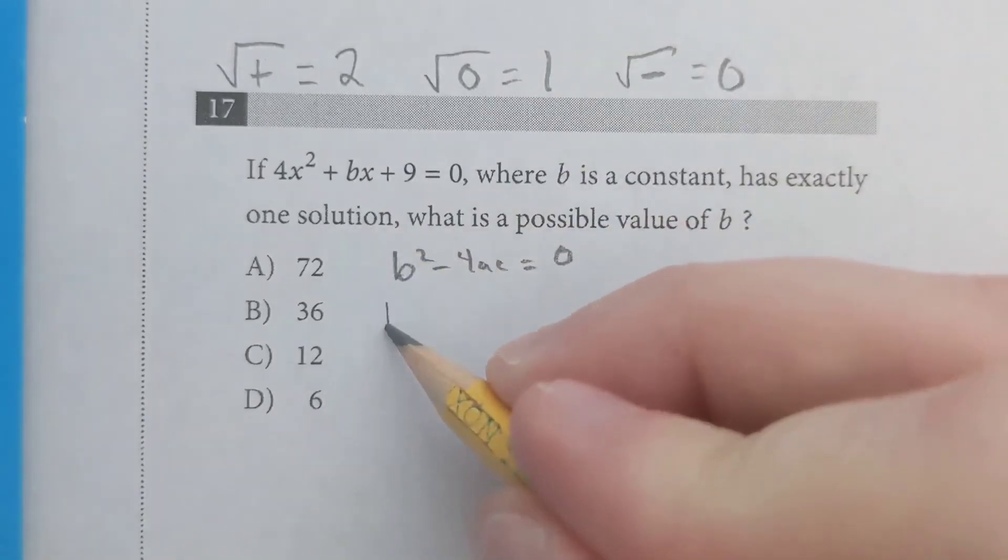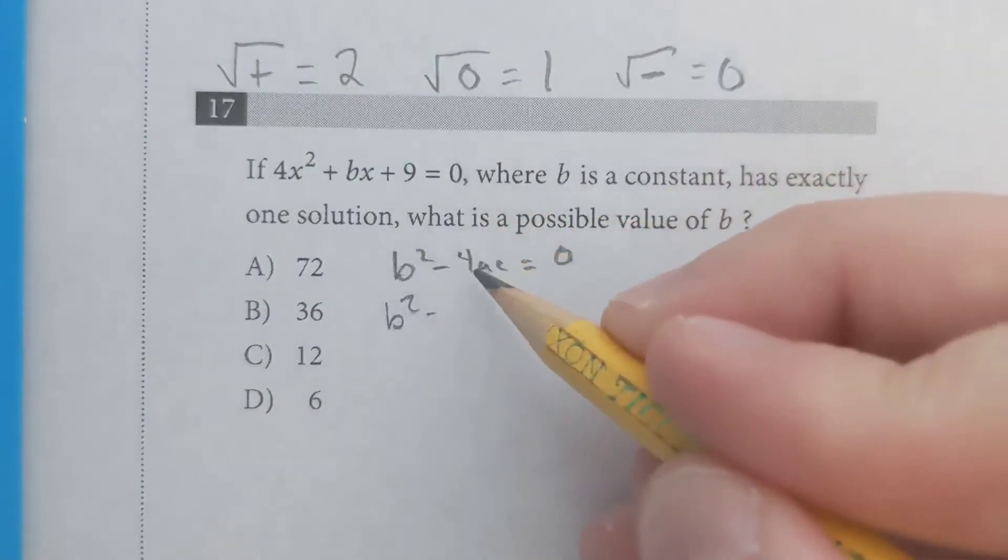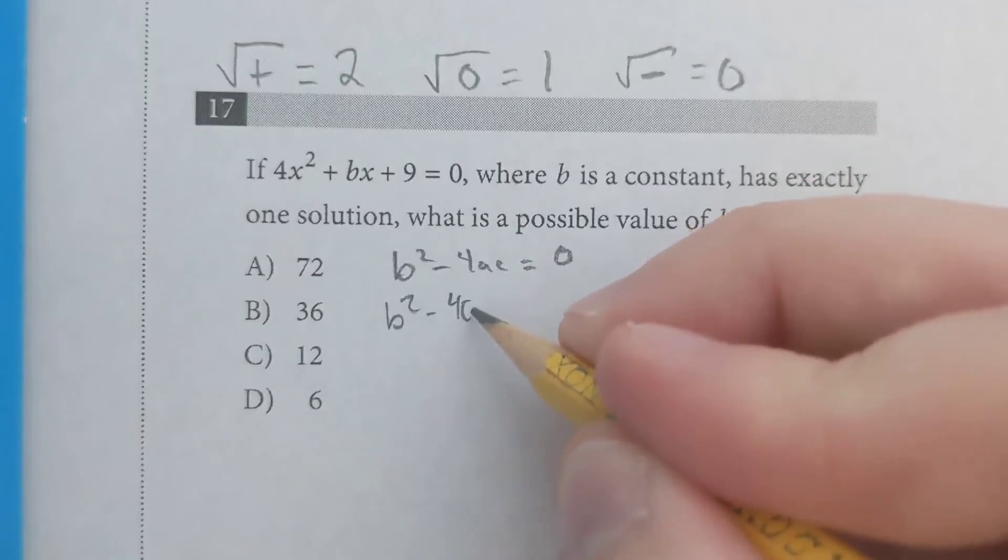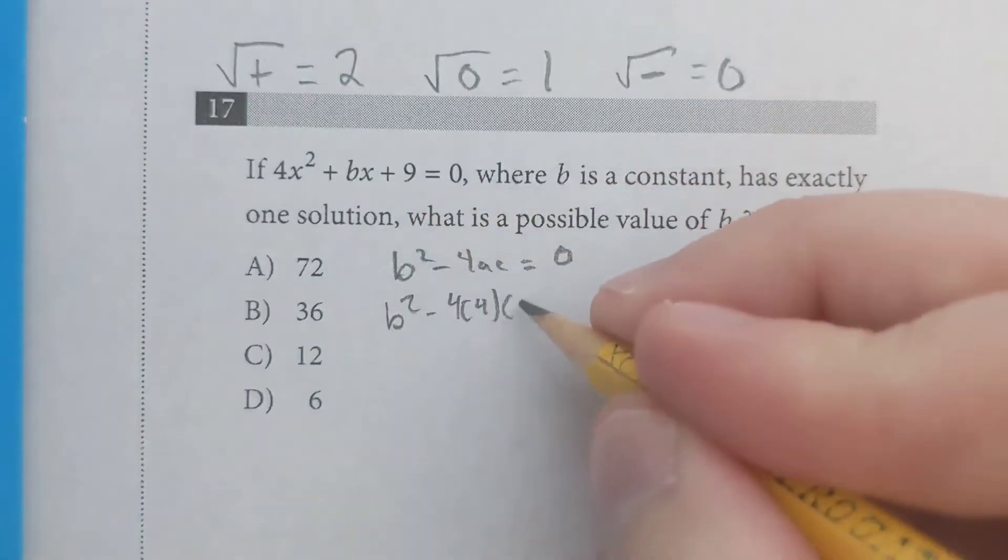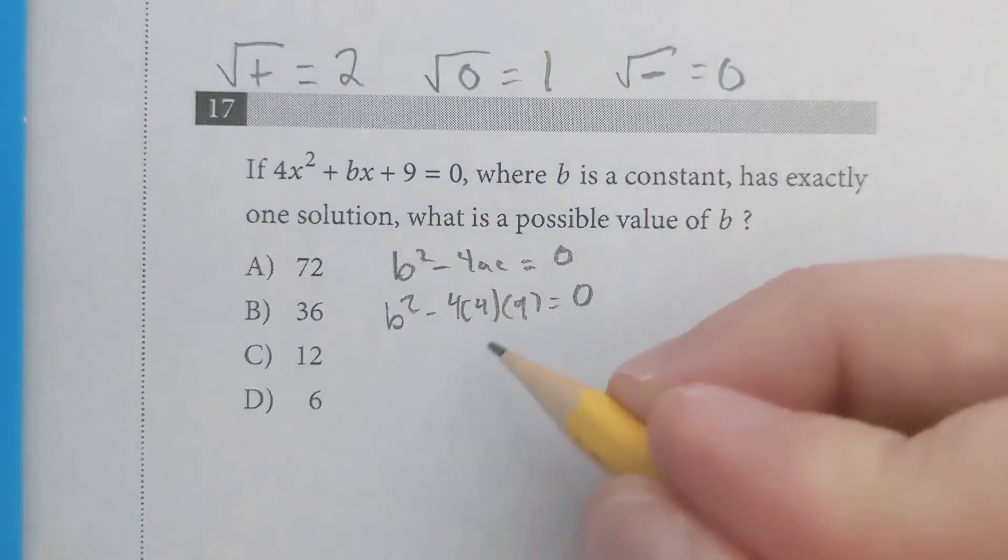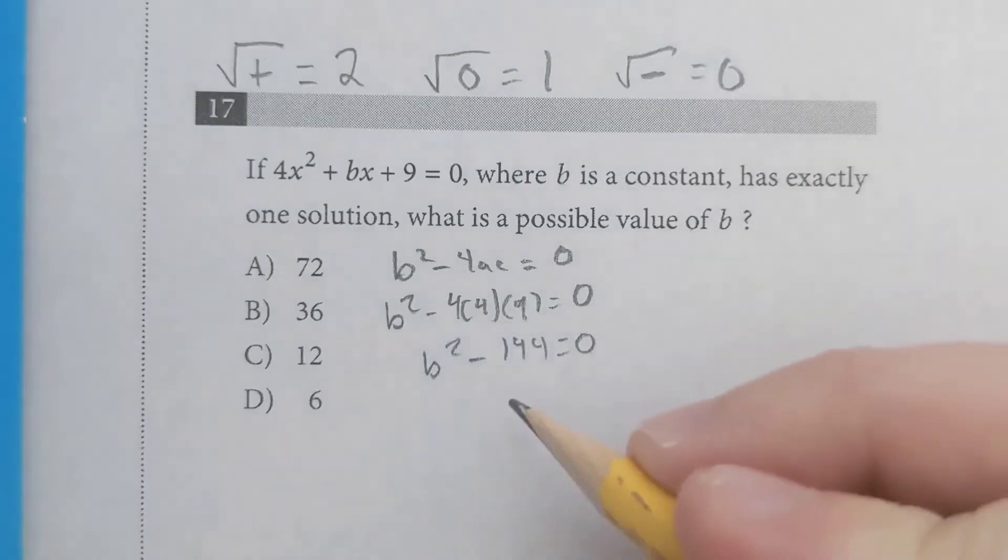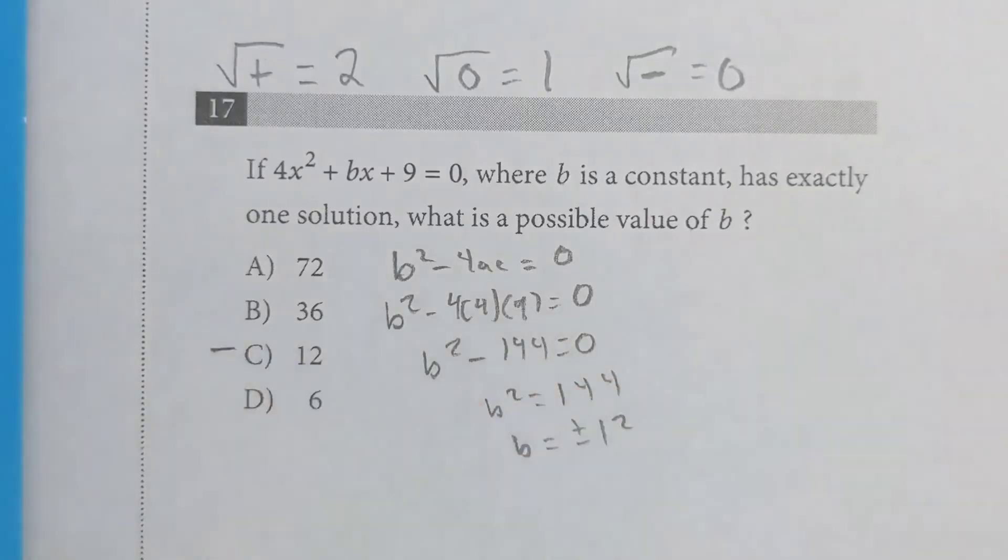Our b is b. Our a is 4. That's 4 times 4. Our c is 9, and that all equals zero. So that's b squared minus 144 equals zero. b squared equals 144. That means b is plus or minus 12, and 12 is the only option there.